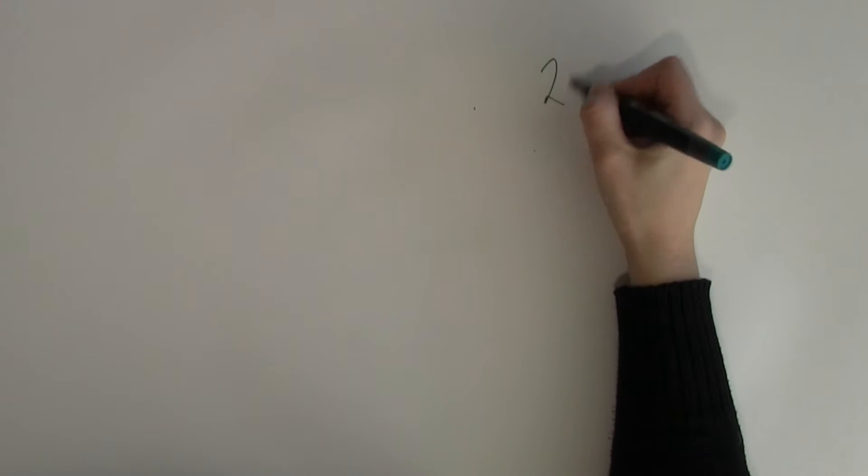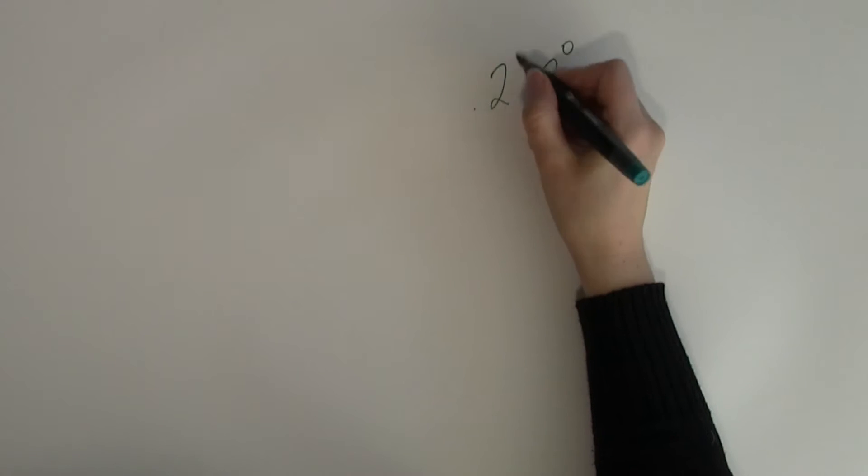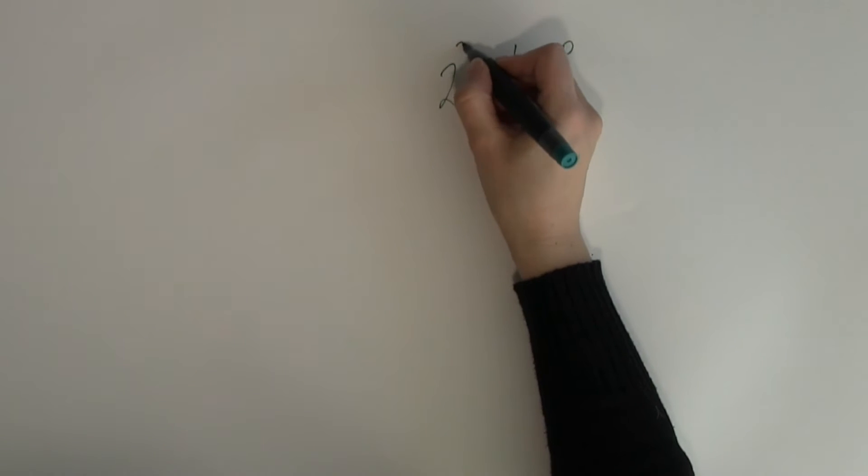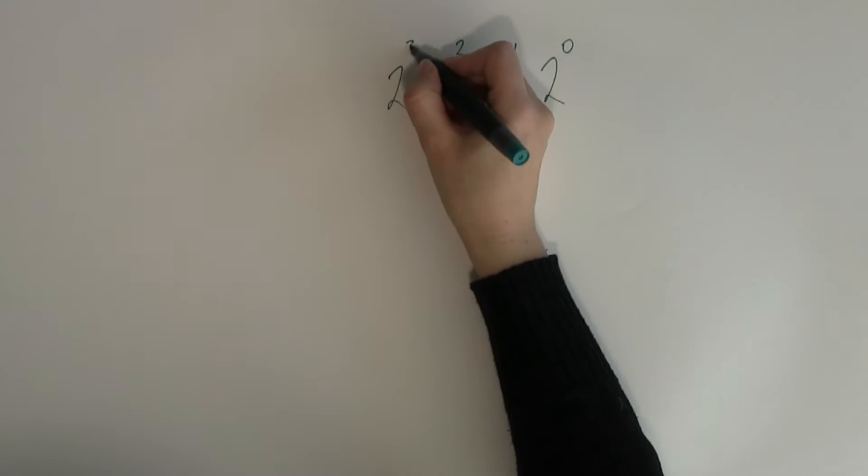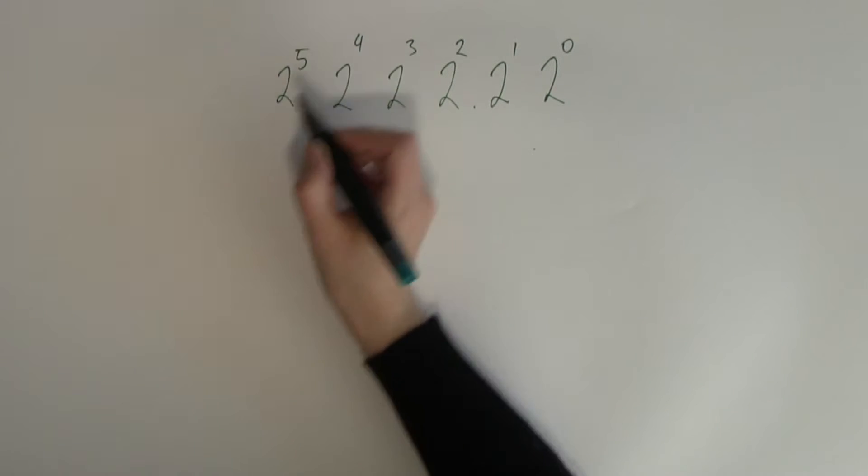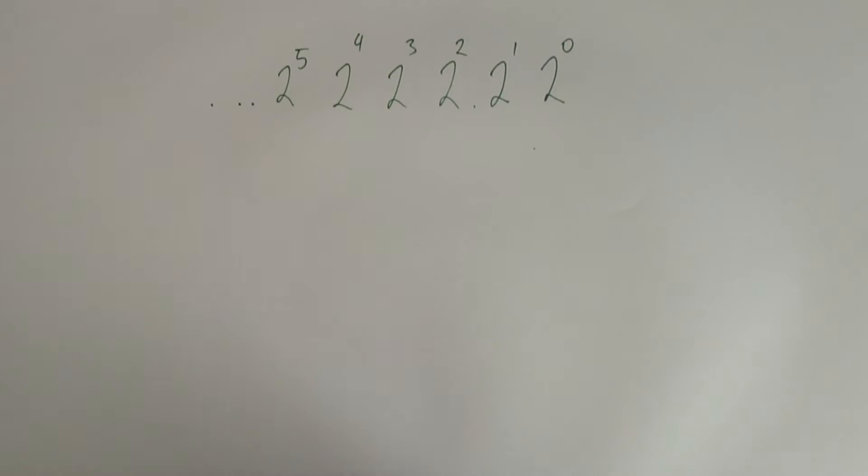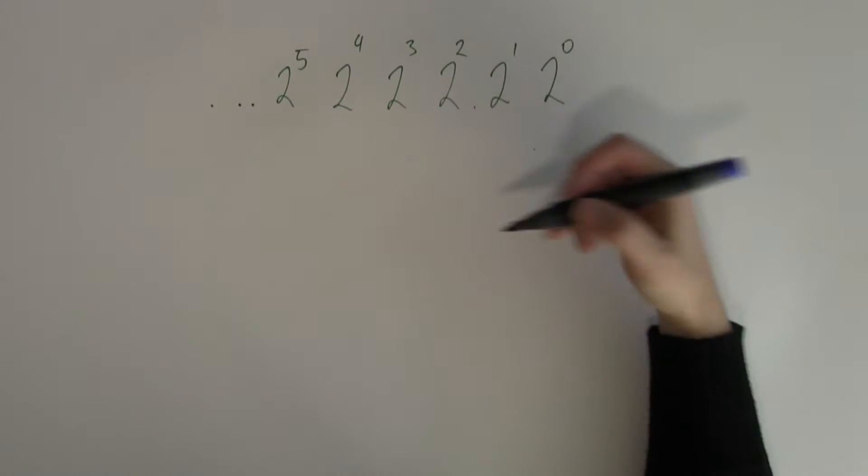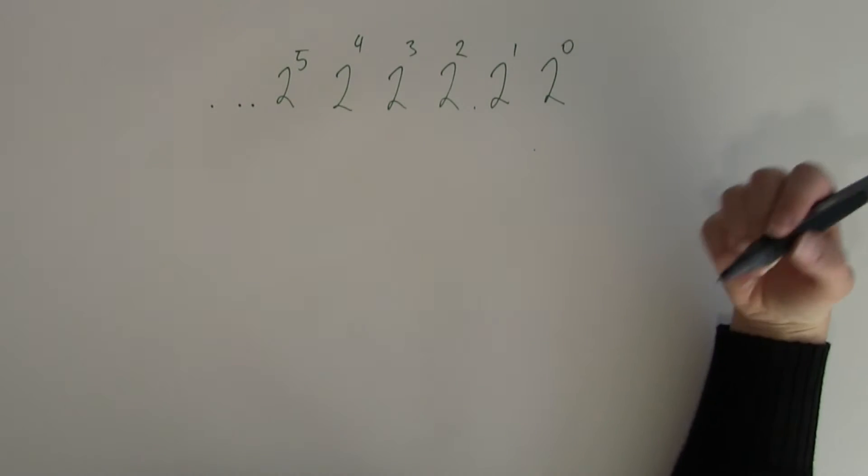Let's look at what the binary place value table looks like. Remember that the place values were 2 to the 0, 2 to the 1, 2 to the 2, 2 to the 3, 2 to the 4, 2 to the 5, etc. You can continue this as long as you wanted to. But these numbers also translate back down to normal decimal numbers without the power form.